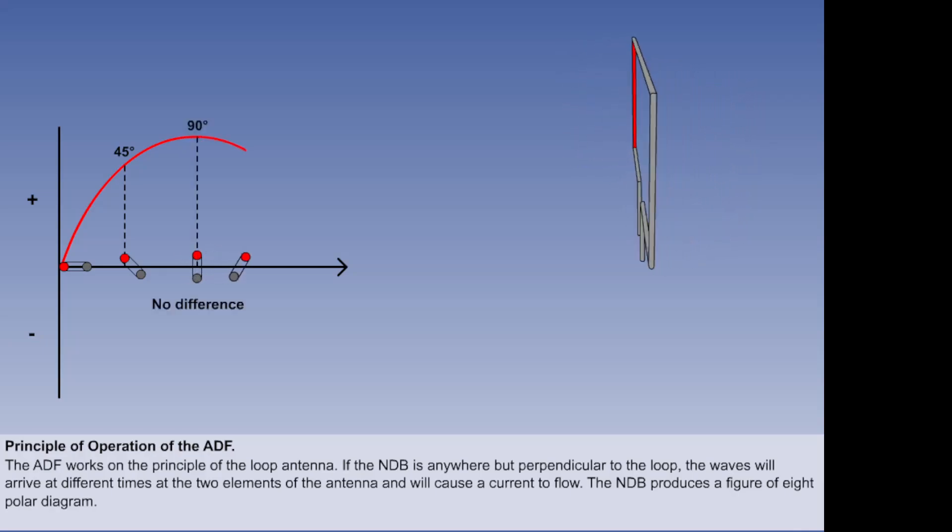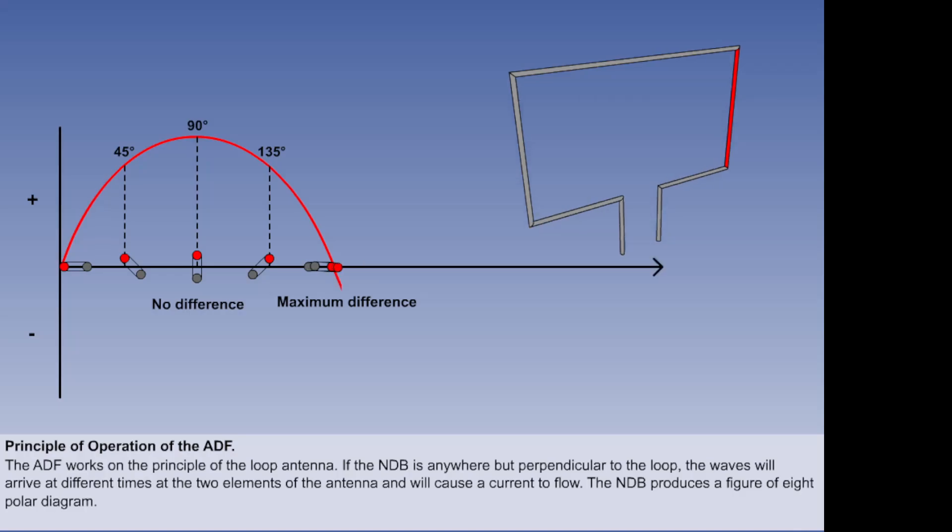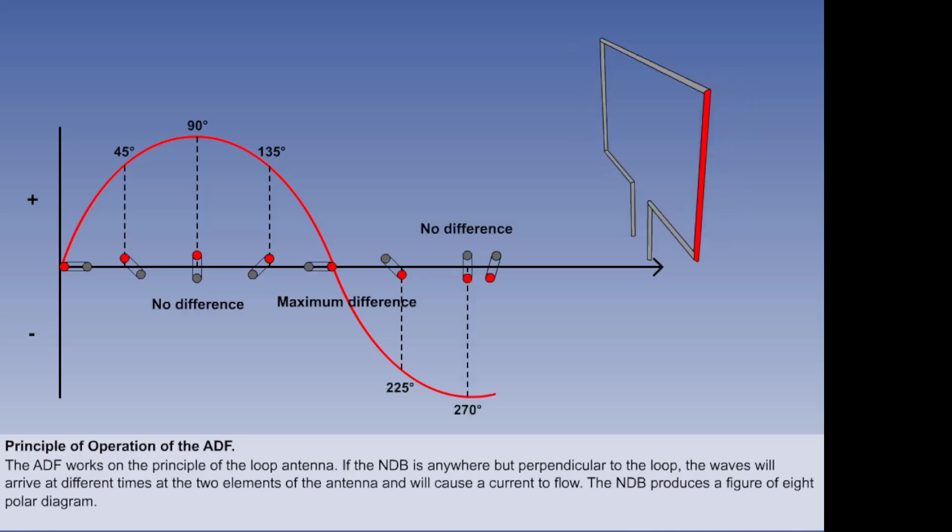If we follow the red colored side of the loop antenna and plot it against the sinusoidal shape of a radio wave, we see that the antenna turns through the positive side of the sine wave from 0 to 180 degrees. It then turns through the negative side of the sine wave from 180 to 360 degrees.